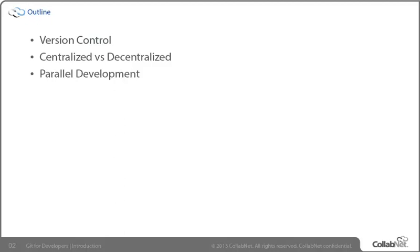The fourth topic takes us a little bit deeper under the covers of Git. We want to look at how it stores things, because that really impacts some of the functionality we see or the experience we have with Git. We're going to do a comparison of the two basic ways that version control tools approach storage: the more traditional deltified storage versus what Git does with snapshot storage.